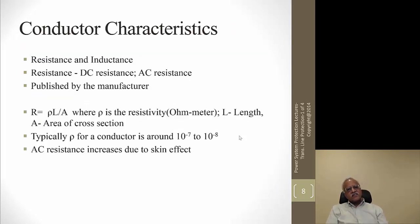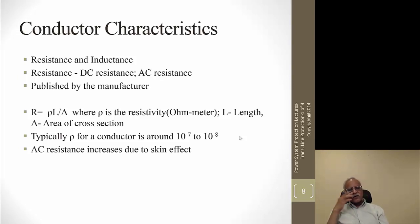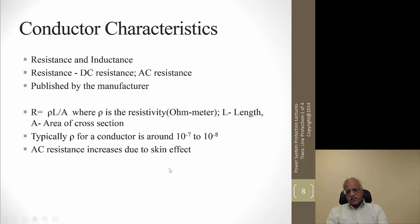Conductor characteristics include resistance and inductance, and we'll discuss capacitance later. DC resistance and AC resistance are both published by manufacturers. The AC resistance increases due to the skin effect, and this is also published in manufacturer catalogs. If you know the conductor type on a transmission tower, you can obtain the resistances from manufacturer catalogs — resistance is resistivity (rho) divided by area.